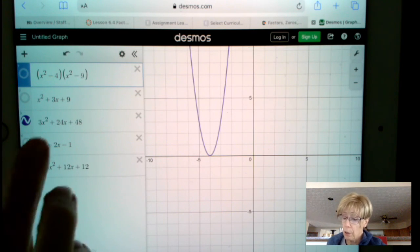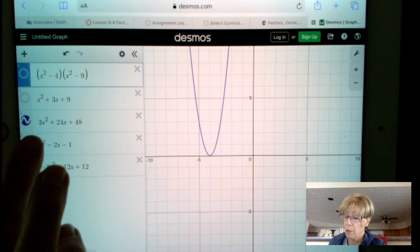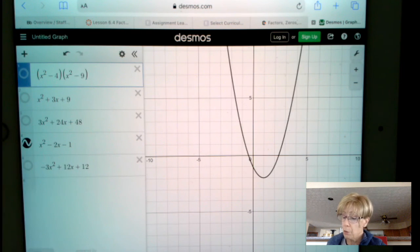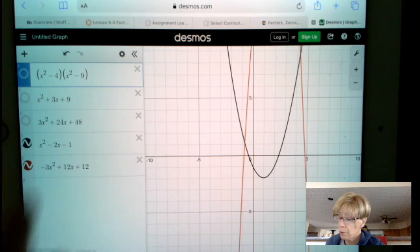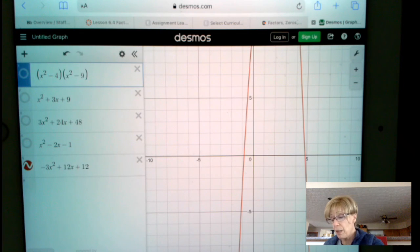But just to take a quick look at our other choices, because we have them typed into Desmos. If I turn this one off, we cross the x-axis twice, so it's not that one, and, whoops, turn that one off, we also cross the x-axis.